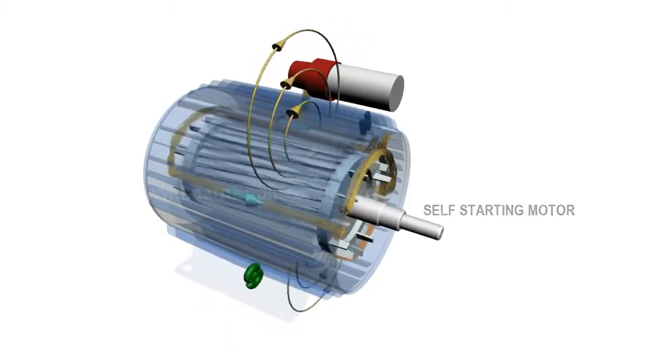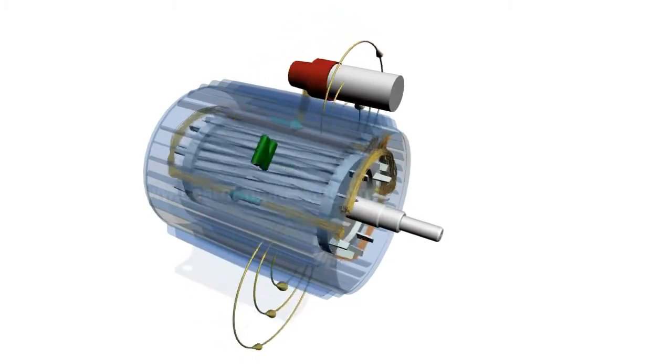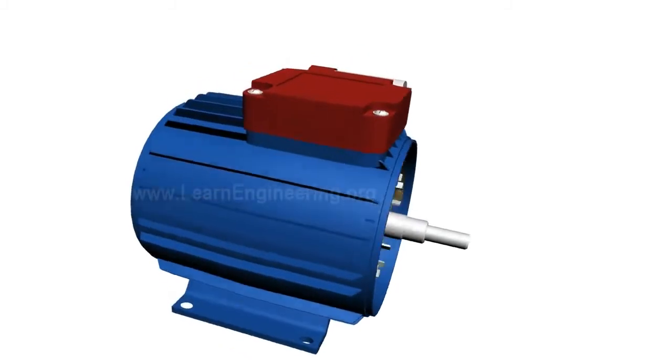After the rotor has attained a specific speed, even if you cut the auxiliary winding, it will keep on rotating as explained earlier. This cutting action is done through a centrifugal switch.